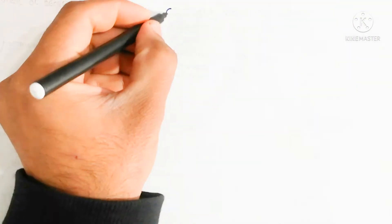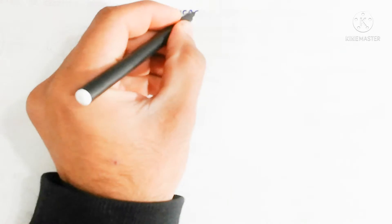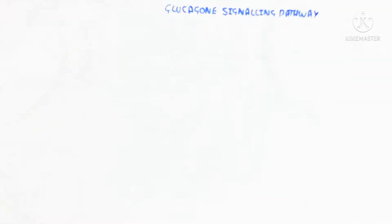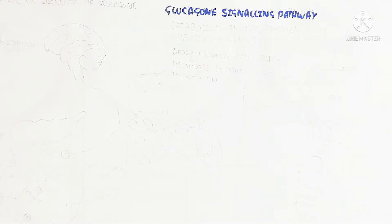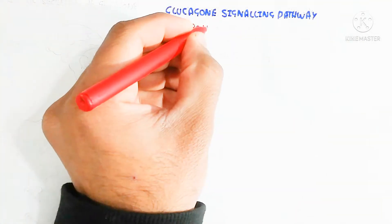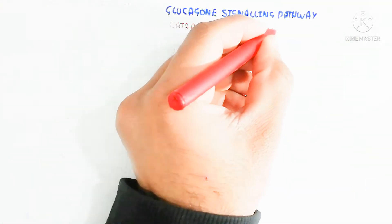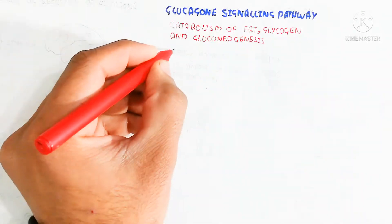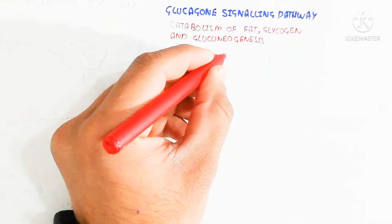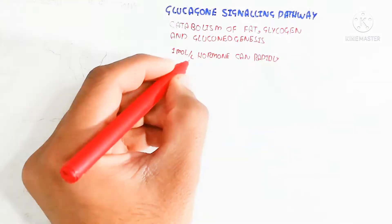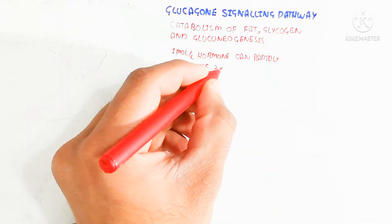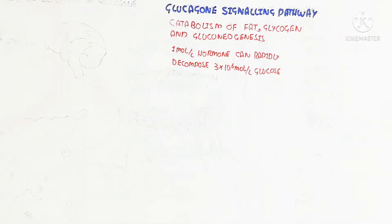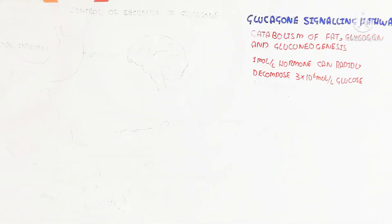Hello, in this video we will discuss about the glucagon signaling pathway. Glucagon is the catabolic hormone, which drives catabolism of fat, glycogen, and gluconeogenesis. At 1 mole per liter, the hormone can rapidly decompose to raise glucose levels by 10 to the power of 6 mole per liter into tissues, for example, liver and muscle.